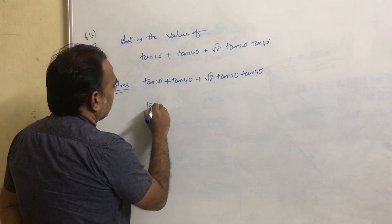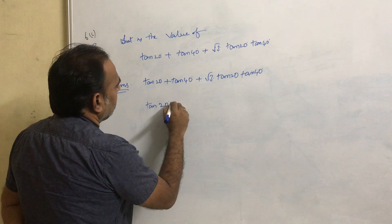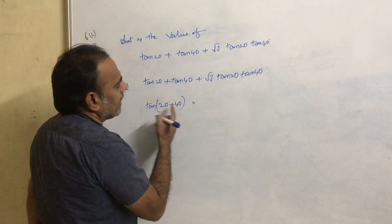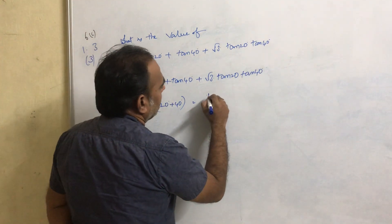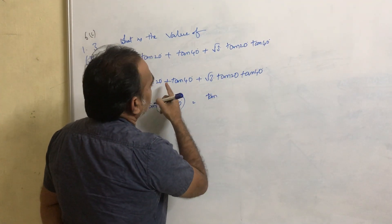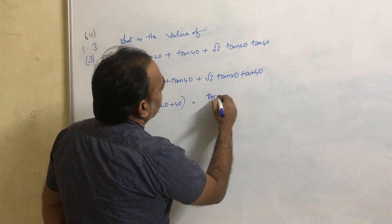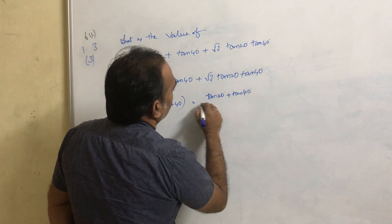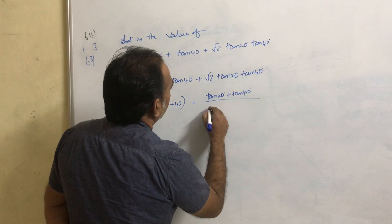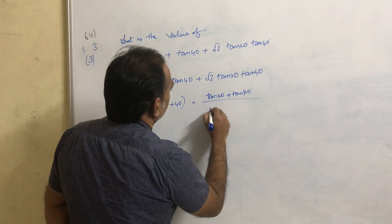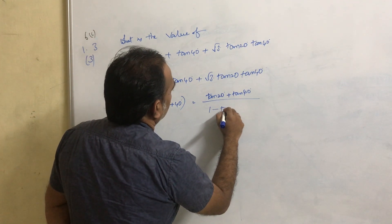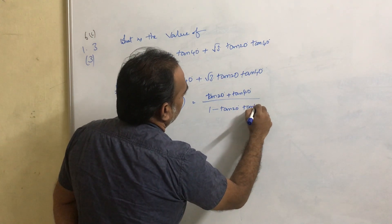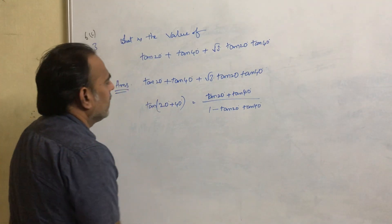Tan 20° plus tan 40°. What is tan 20° plus tan 40°? Because this term should come, right? So tan 20° plus tan 40° whole divided by 1 minus tan 20° tan 40°.